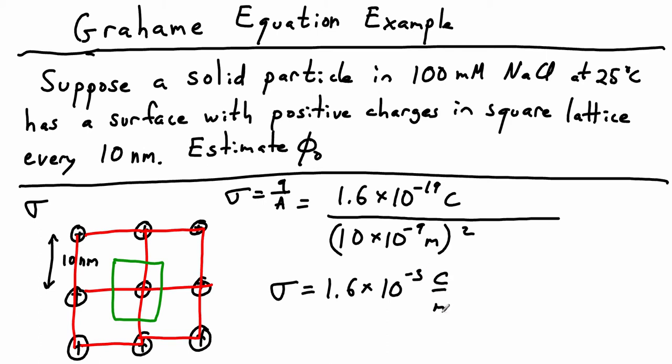We've got sigma, and if we write out our linear Graham equation, we know that sigma equals epsilon times kappa, which is the inverse Debye length, times the surface potential.